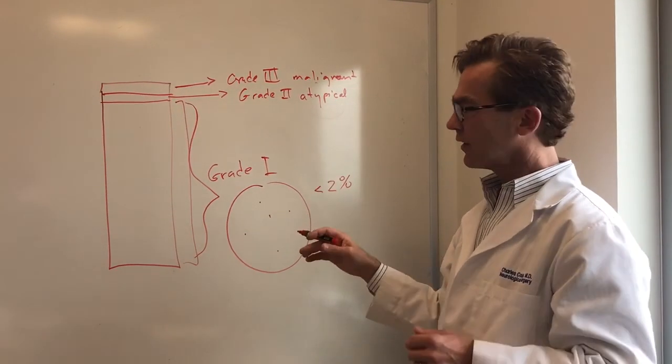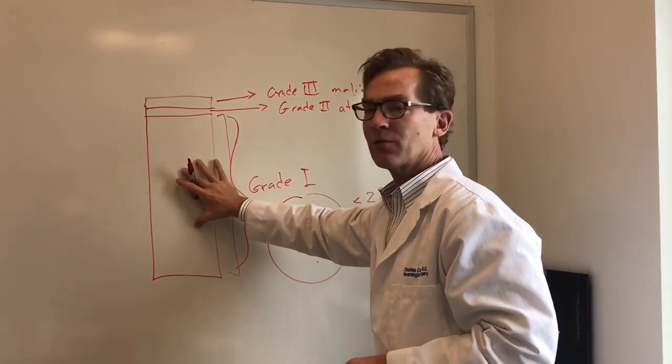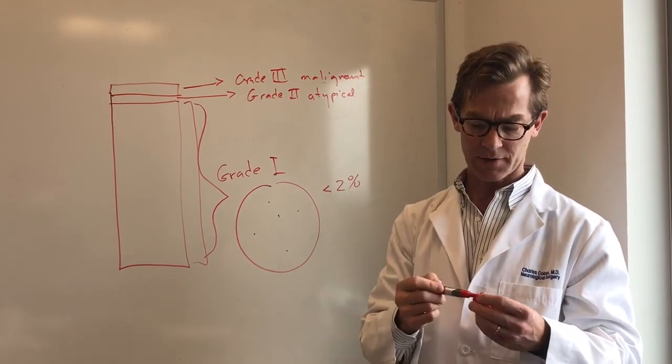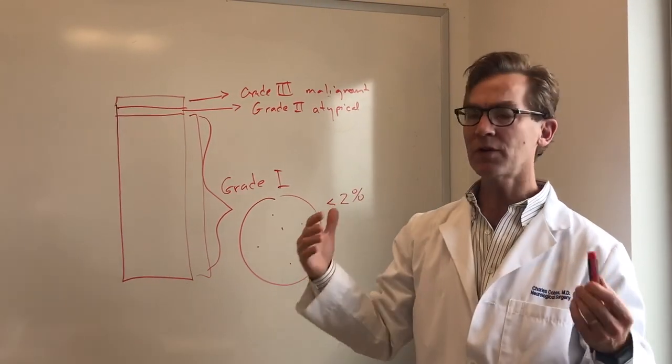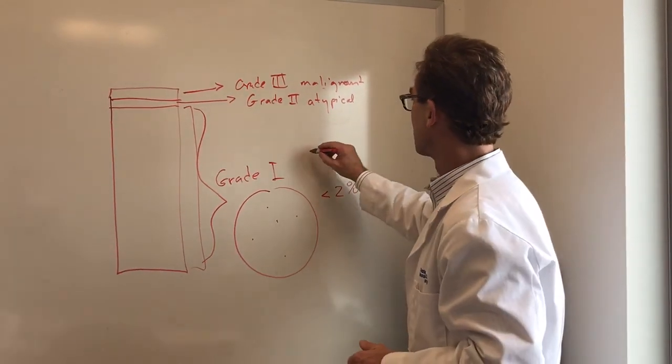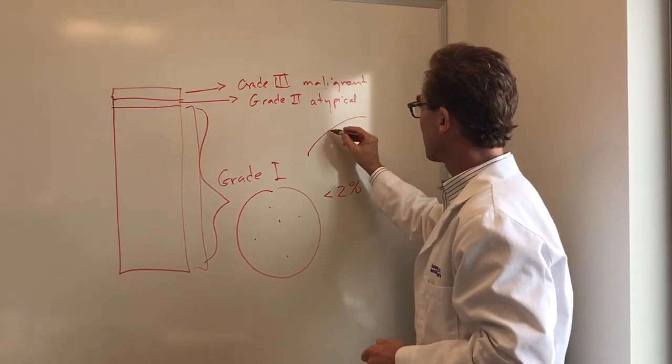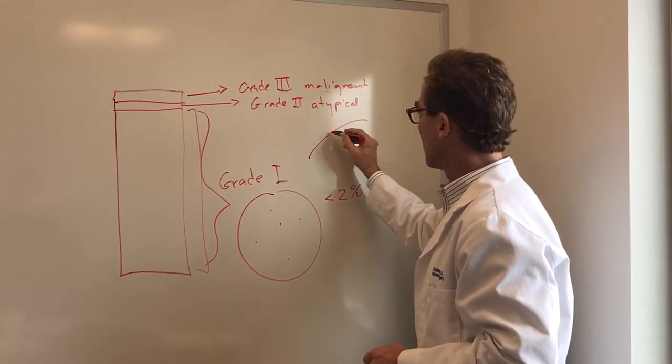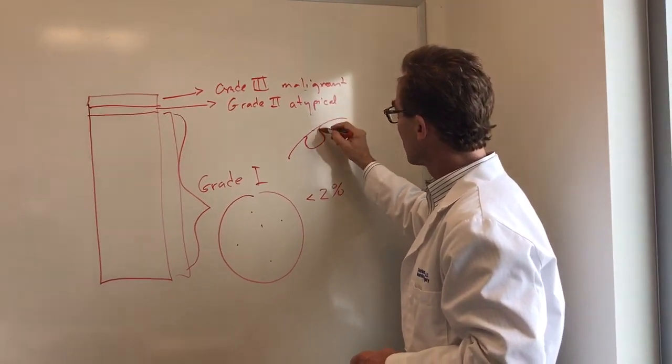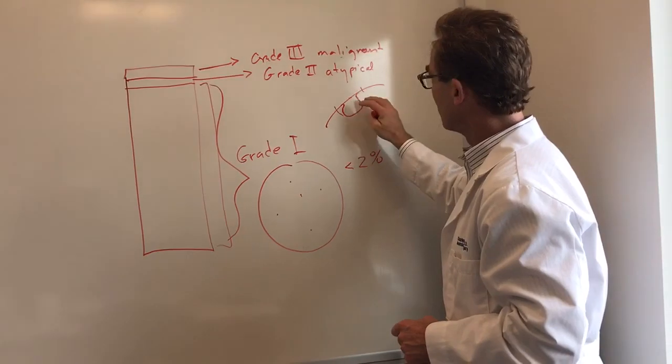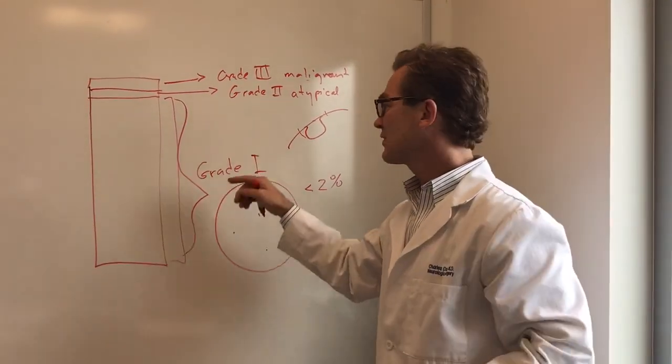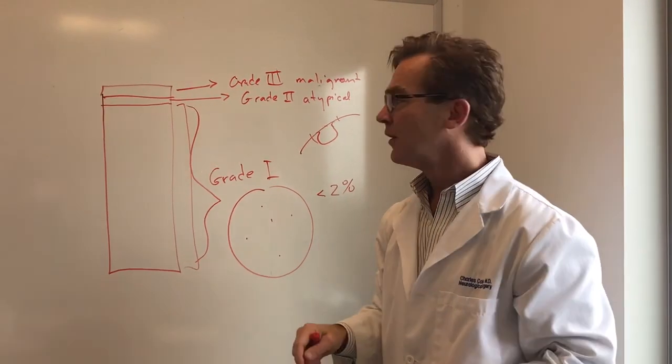So, in general, if you operate on somebody that has a grade 1 tumor and take it out, and you get the whole thing out, there's a grading system called the Simpson grading. But if you do that, you're pretty much sure it's not going to come back. Most of these tumors, as I mentioned, grow on this leathery membrane called the dura, and they usually attach to the dura like that. So, if you take out the tumor plus the little area where it's growing to from here to here, you're done for most grade 1s. You can watch them just to make sure that it doesn't come back in the future.